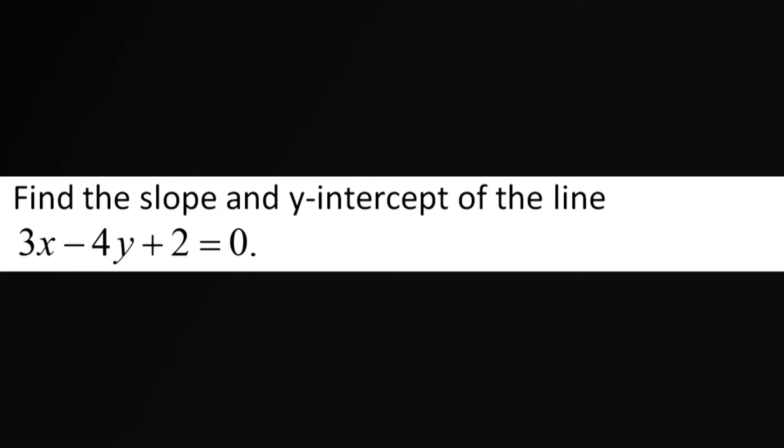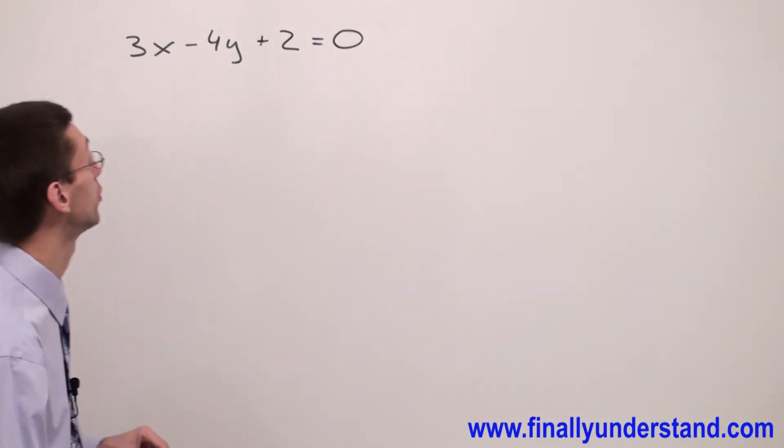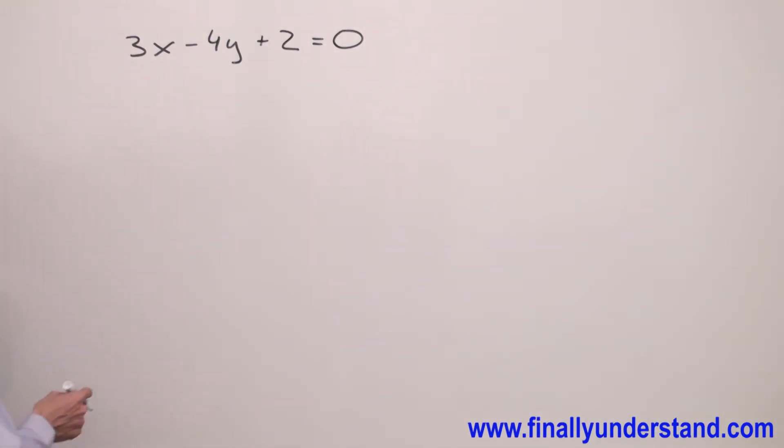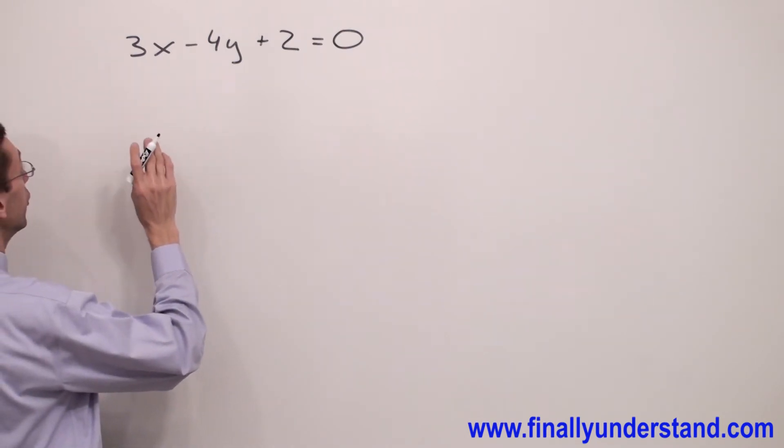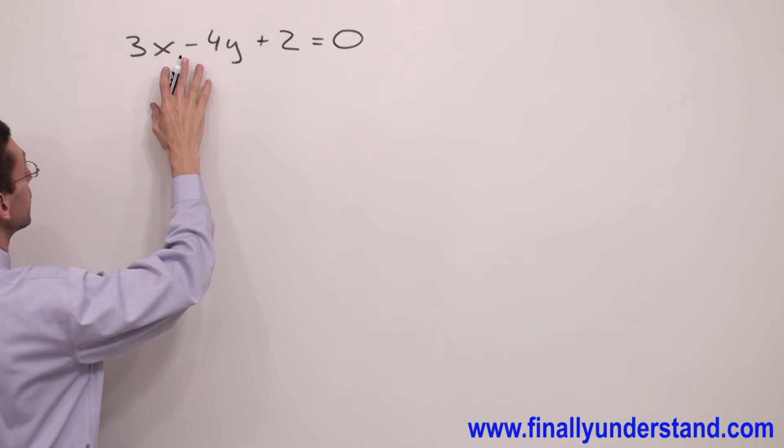Let's take a look at this example again. We have general form and we're supposed to convert general form to slope-intercept form in order to find the slope. So we have to move, for example, negative 4y to the right side.